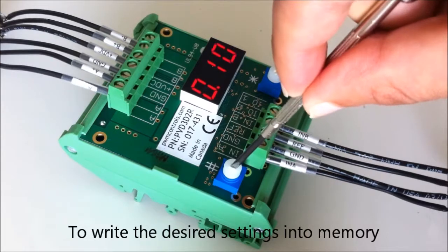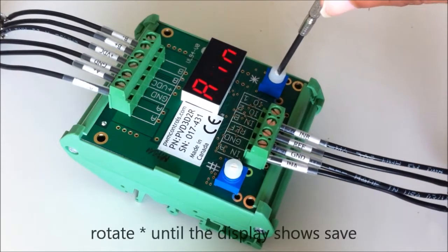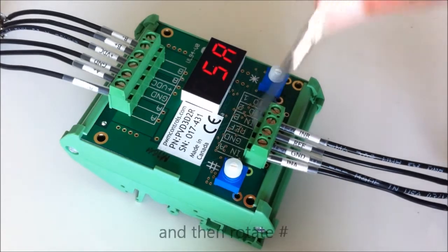To write the desired settings into memory and return to normal mode of operation, rotate star until the display shows save, and then rotate pound.